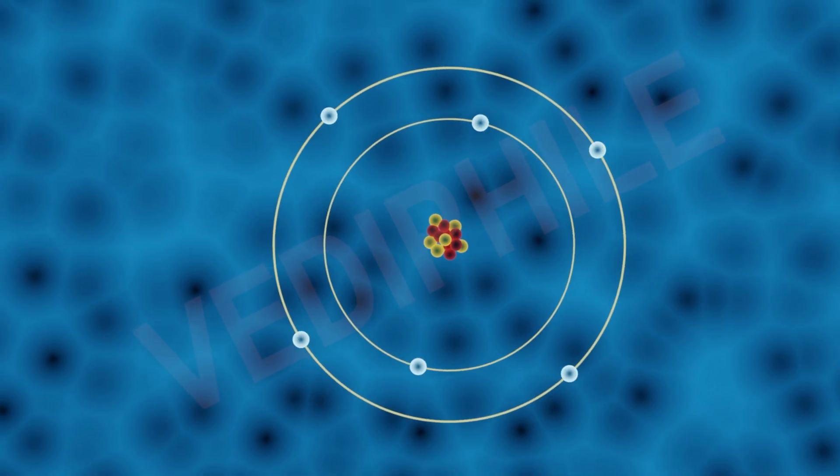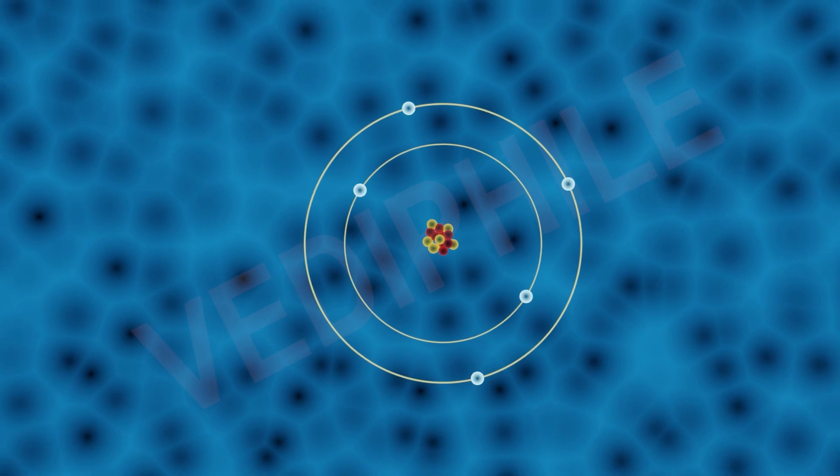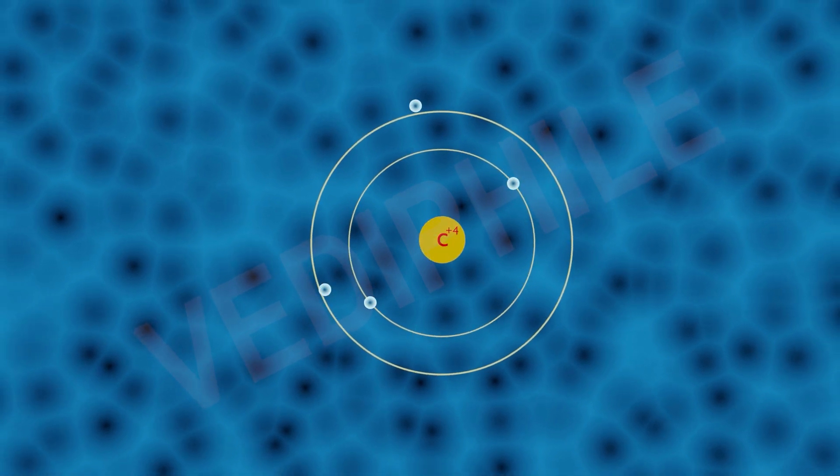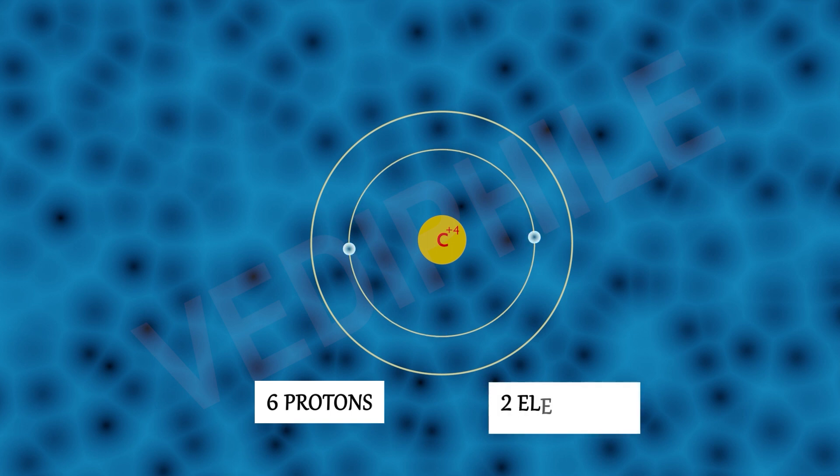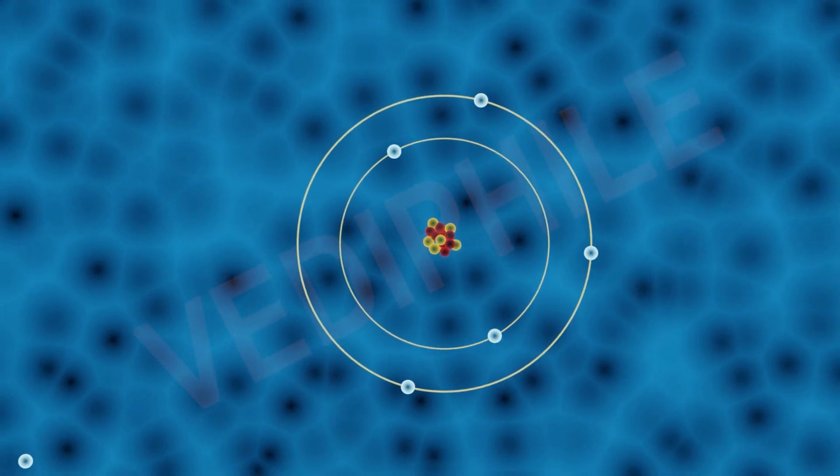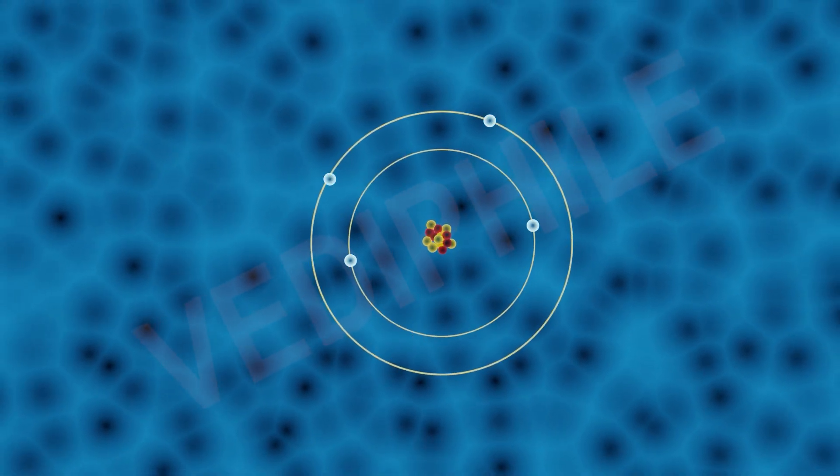What happens when it becomes cation? It could lose 4 electrons forming C4+ cation. Now it has 6 protons and 2 electrons, but it would require a large amount of energy to remove 4 electrons, leaving behind a carbon cation with 6 protons in its nucleus holding on to just 2 electrons.